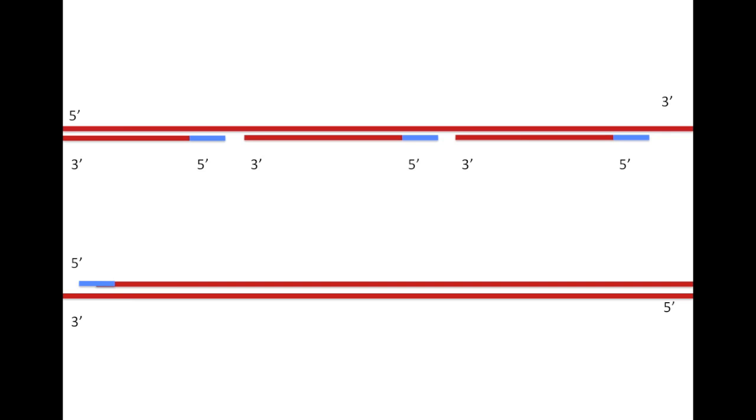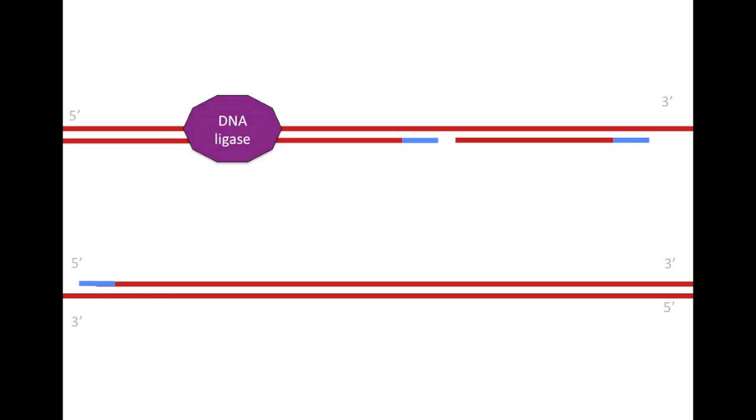As you may imagine, these fragments must now be linked. The fourth enzyme in our DNA replication story is DNA ligase, and its job is to link these Okazaki fragments together. Once DNA ligase has accomplished its function, you can now see that we have 2 full double-stranded DNA molecules, and replication of the DNA is complete.